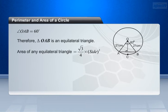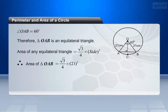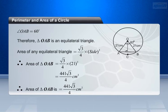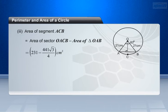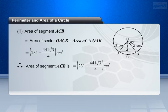We know that area of any equilateral triangle is root 3 by 4 into side square. Therefore, area of triangle OAB equals root 3 by 4 into 21 square. This is equal to 441 root 3 by 4 cm square. Therefore, area of segment ACB equals area of sector OACB minus area of triangle OAB. This is equal to 231 minus 441 root 3 by 4 cm square.